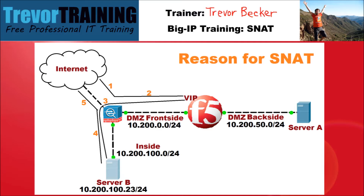1. An outside client issues a request for a VIP on the F5 BIG-IP. The request is routed through the infrastructure and points to the customer's edge firewall. 2. The firewall statically NATs the destination IP address of the connection and sends it to the destination of the VIP on the BIG-IP. 3. The BIG-IP analyzes the configuration of the VIP and uses the load-balancing algorithm to select the pool member of Server B, which is located in the inside segment.